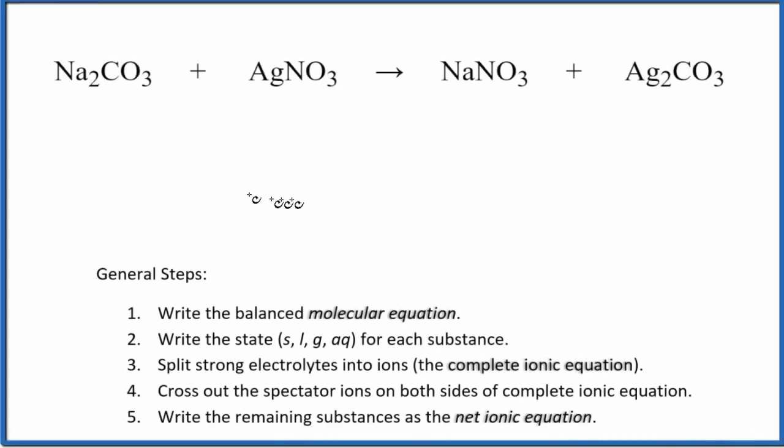In this video, we'll write the net ionic equation for Na2CO3 plus AgNO3. That's sodium carbonate plus silver nitrate. So we have these rules here to guide us. The first thing we need to do is balance the molecular equation. So it looks like if we put a 2 here and a 2 here, that would balance the molecular equation.